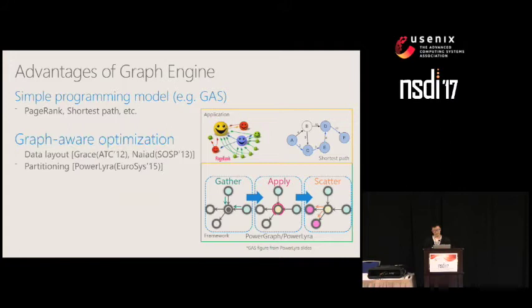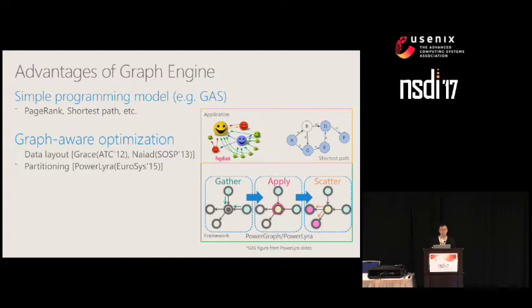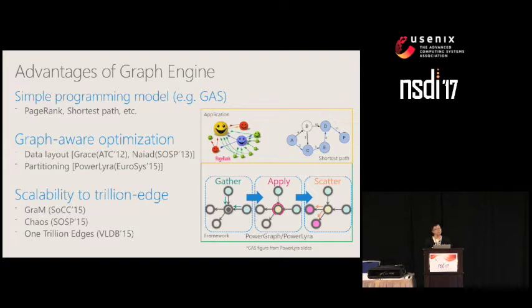The second advantage is that graph engines can apply many graph-aware optimizations. Previous work has demonstrated optimizations for the data layer, benefiting memory access, and partitioning, which balances workload and reduces network traffic. These optimizations are usually transparent to users. The third advantage is scalability — in 2015, three papers proved the great scalability of graph engines in handling large-scale graphs.